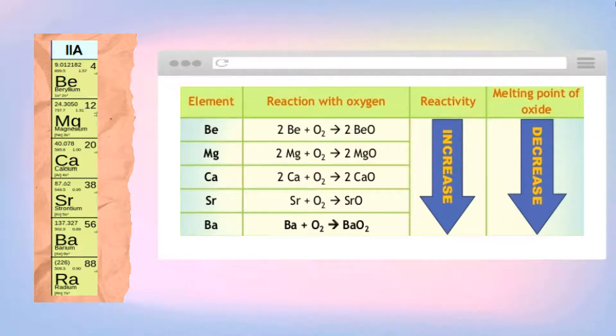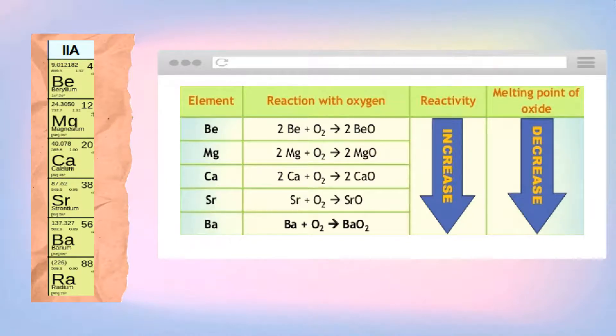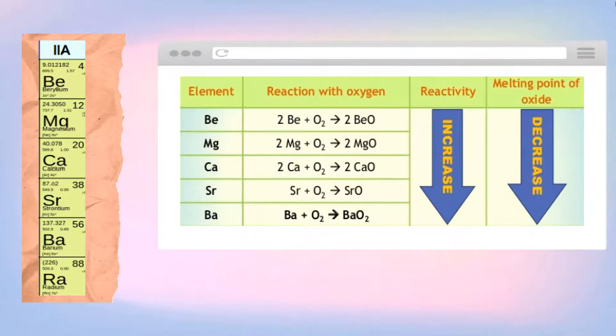Going down the group, the reactivity increases due to the larger atoms being able to lose their outer 2 electrons more readily than the smaller atoms in the group. The melting point of the oxides will also decrease down the group.